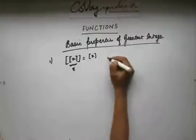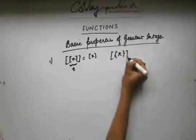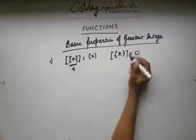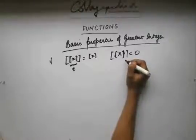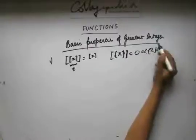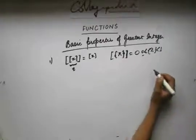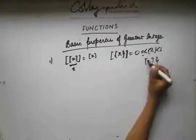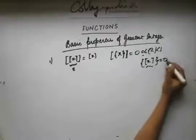The next important property is that box(fractional part of x) = 0. This is very obvious because if I take the fractional part, it lies between 0 and 1. If I take the box of that, I need to find the greatest integer less than the fractional part, which gives 0. Also, fractional part of box(x) = 0 as well, because box(x) is an integer and the fractional part of an integer is 0.